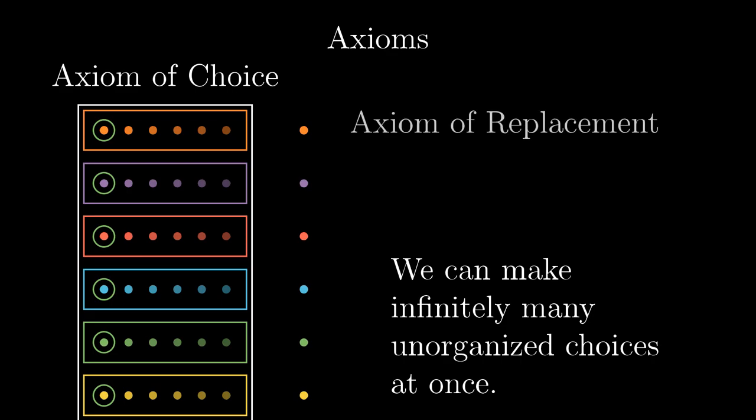The axiom of replacement can do this. It gets a rule, in our case say replace every set with its lightest element, and it will transform our colorful set of sets into the set of its representatives.